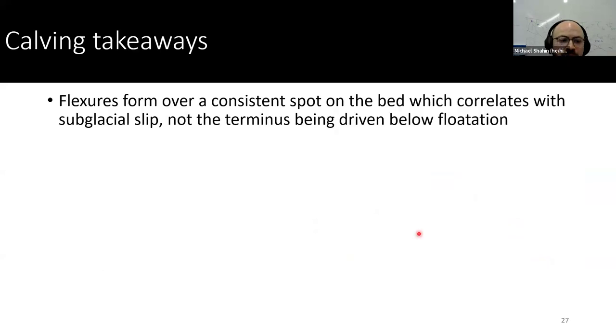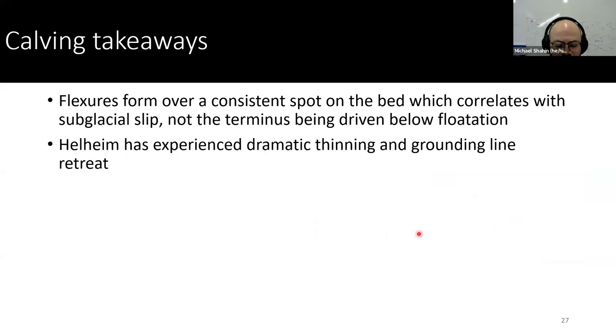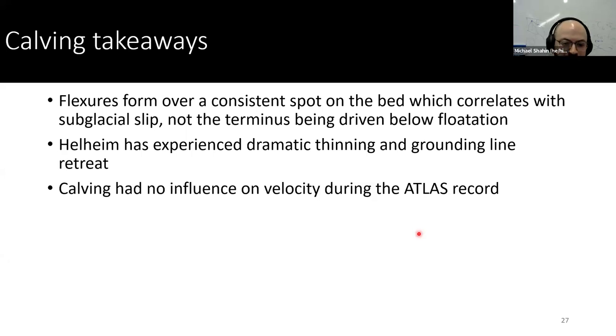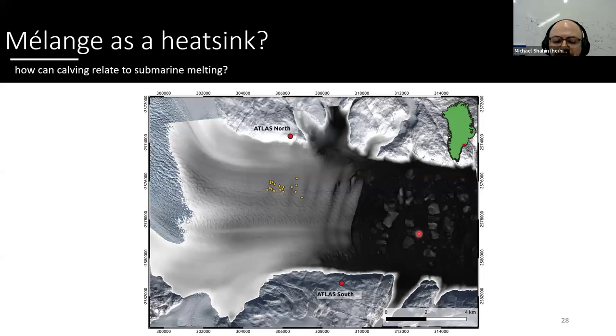So I guess that's reassuring that not all calving events will create, or if any calving events, really a strong or consistent response to velocity. So my main takeaways for this part is just that flexures form over a consistent spot and might be associated with subglacial slip. And it's just different than what it was previously written. We have dramatic thinning and grounding line retreat over time, and there is really no influence on velocity from calving in the Atlas record. And calving style doesn't seem to have any effect on the velocity either.